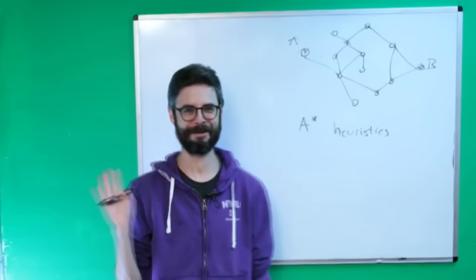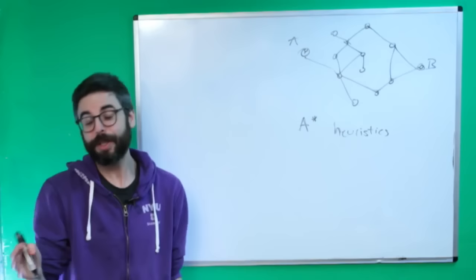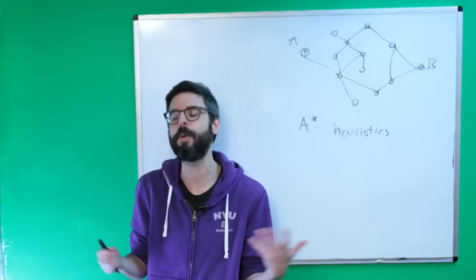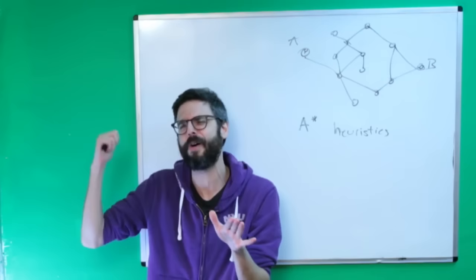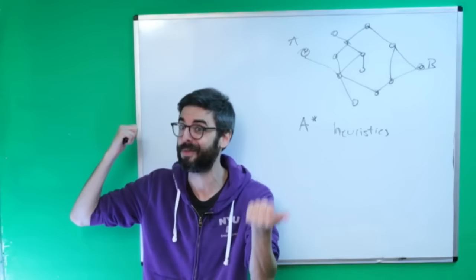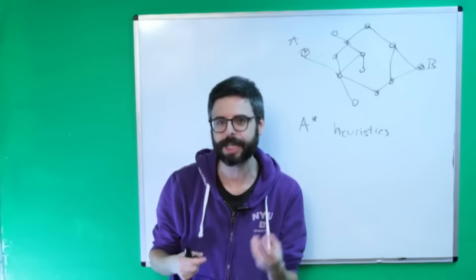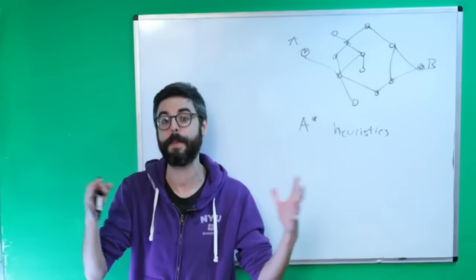Heuristics is a fancy word, but it's really just a word for describing an educated guess. So instead of checking every single possible route, what if we could make a guess — like this route is probably going to be the best? If I know that going backwards will take longer than going forwards, I can skip checking the possibility that goes backwards. This kind of educated guessing allows you to skip checking a lot of possibilities and makes the algorithm much faster.